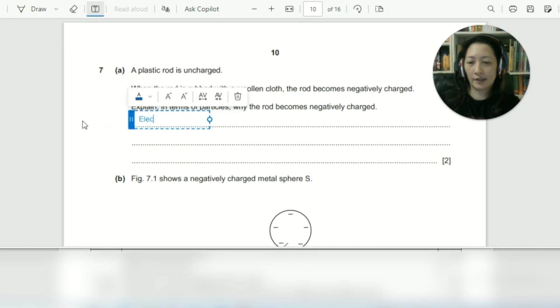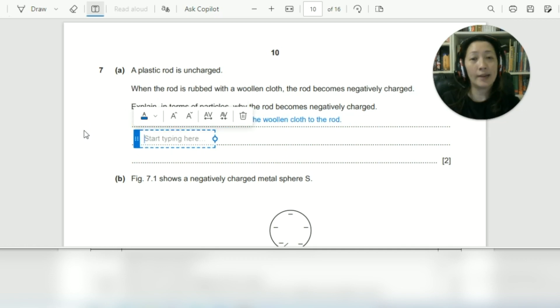So electrons have been moved from the woolen cloth to the rod. This is a two mark question, so this needs a little bit of further elaboration. So why the rod has become negatively charged? Because now the rod has extra electrons. So we can say that the rod has gained extra electrons.